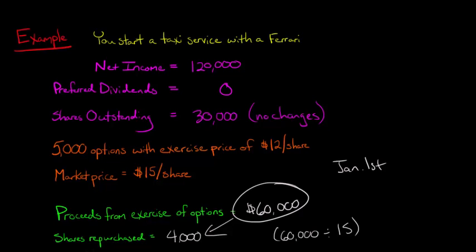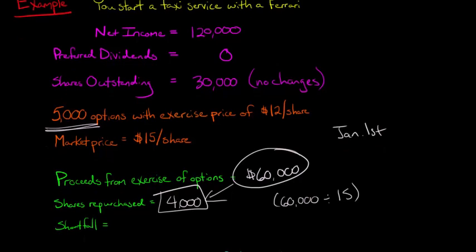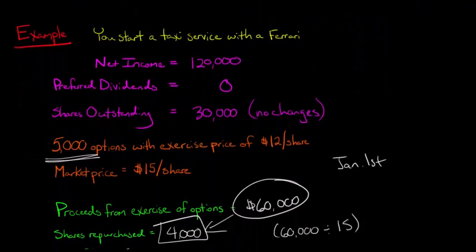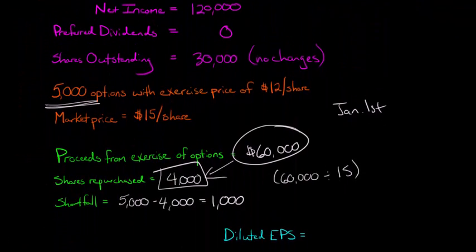But we've got a problem here. We only have enough money to repurchase 4,000 shares, and there are 5,000 options that have been exercised. So we're 1,000 shares short. If we think about our shortfall, we need 5,000 shares. With the money we got, we were only able to purchase 4,000 shares. So we still have 1,000 shares that we're short. And that is going to affect our denominator in our basic earnings per share.